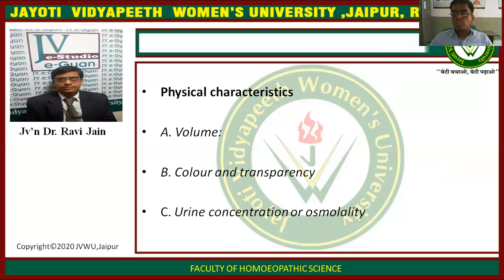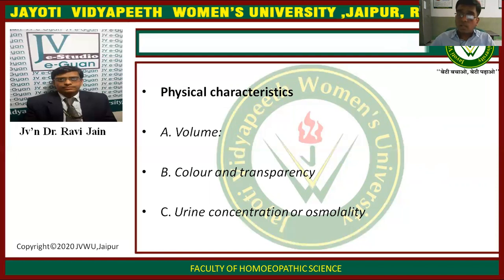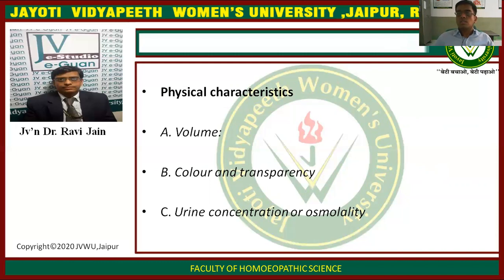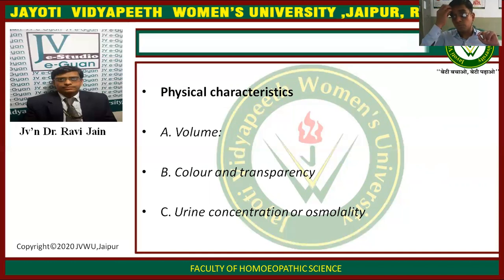Then we check for the colour and transparency. The sample that is collected is allowed to stand for some time, and then we observe what is the colour of the urine — whether it is white, whether it is transparent, or if it is yellow, dark yellow, or light yellow, or whether it is turbid. Does the urine contain any dots, which is specially seen in case of hematuria? The transparency has to be looked for. So first we check for the volume, and next we check for the colour and transparency of the urine.